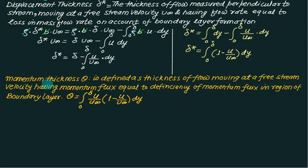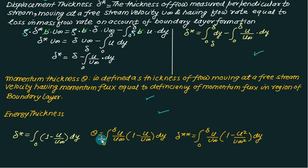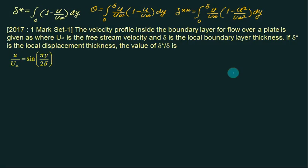Similarly, if there is a loss of mass and momentum, there is also a loss of energy, so we define the energy thickness δ** (delta double asterisk). Its formula is: δ** = integral from 0 to delta of (u/u-infinity)(1 minus u²/u-infinity²) dy. This follows from the kinetic energy expression (1/2 times mass times velocity squared). To summarize: δ* = integral of (1 minus u/u∞) dy; θ = integral of (u/u∞)(1 minus u/u∞) dy; δ** = integral of (u/u∞)(1 minus u²/u∞²) dy.